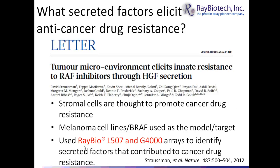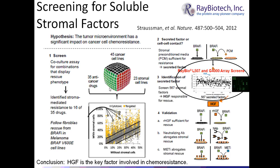Todd Golub's group used the Ray Biotech L507 and G4000 arrays to identify secreted factors from stromal cells that result in cancer drug resistance — specifically inhibition of BRAF signaling, which promotes proliferation. The experiment utilized 23 independent stromal cell lines co-cultured with 45 independent cancer cell lines, then treated with 35 independent cancer drugs, all designed to inhibit BRAF.